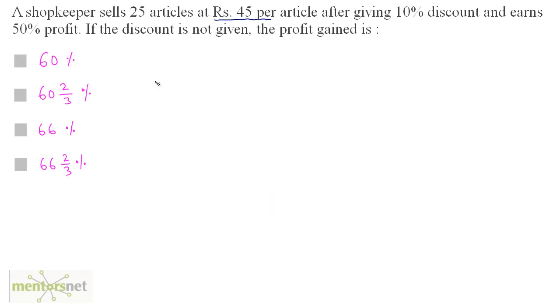A shopkeeper sells 25 articles at Rs. 45 per article after giving 10% discount and earns 50% profit. If the discount is not given, the profit gained is?